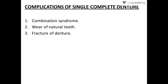Number five is bone loss under distal extension prostheses. Saunders in 1978 added six additional features: number one, loss of vertical dimension; number two, occlusal plane discrepancy; number three, anterior spatial repositioning of the mandible; number four, loss of stability and refabrication of existing dentures; number five, epulis fissuratum; and number six, periodontal problems of the remaining teeth.